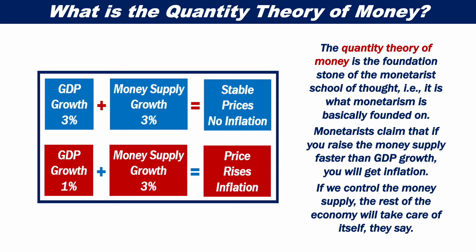The quantity theory of money is the foundation stone of the monetarist school of thought — it is what monetarism is basically founded on. Monetarists claim that if you raise the money supply faster than GDP growth, you will get inflation.